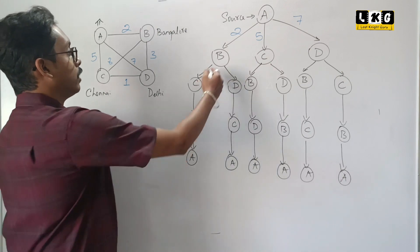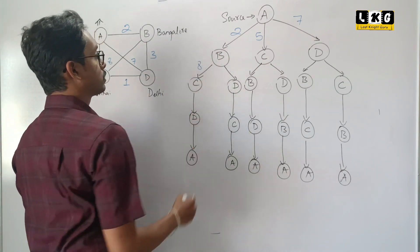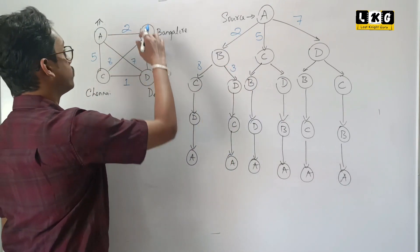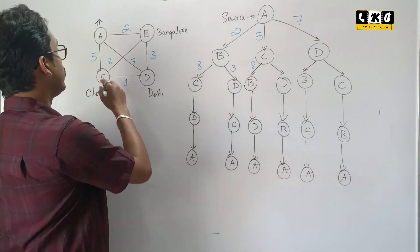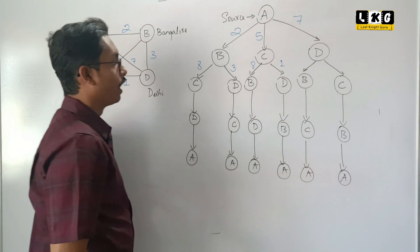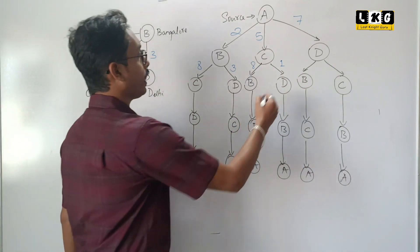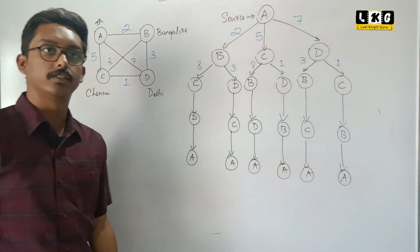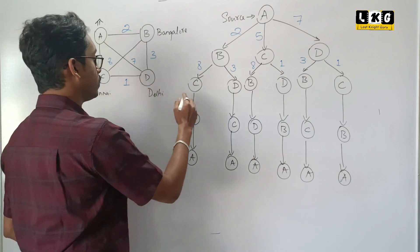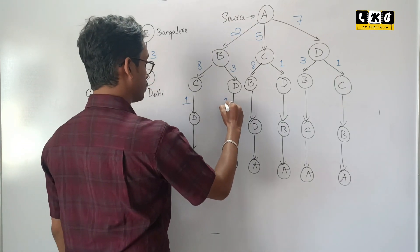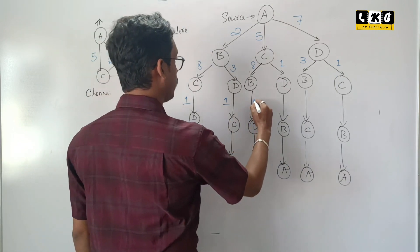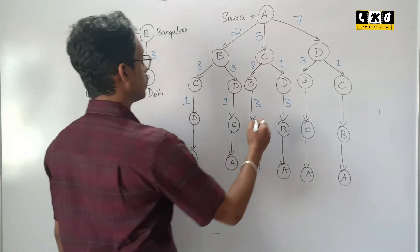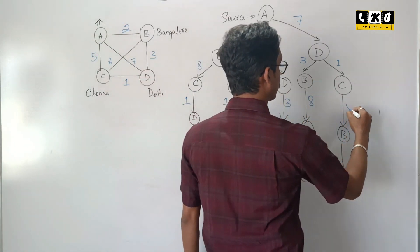Same thing. B to C, the cost is 8. B to D, the cost is 3. C to B, again the cost is 8. And C to D, the cost is 1. D to B, the cost is 3. D to C, the cost is 1. We are done with level 2. Coming to C to D again — cost is 1. D to C — cost is 1. B to D — cost is 3. D to B — cost is 3. B to C — cost is 8. And C to B — cost is 8.